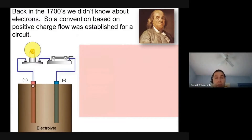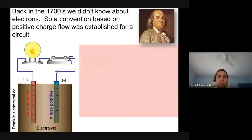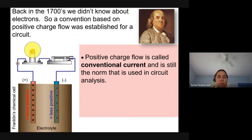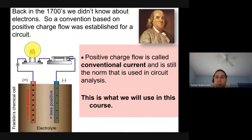Back in the 1700s, scientists first studying electric circuits didn't know about electrons, so the convention was established that current flow was described in terms of the flow of positive charge. We still use that convention today. Whenever you hear 'conventional current flow,' it means the flow of positive charge — that's the convention used in IB, AP, and all college curricula.